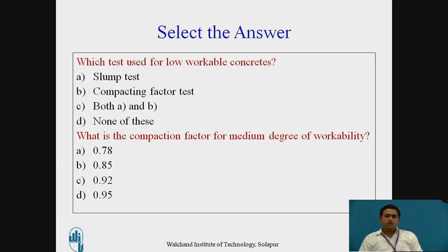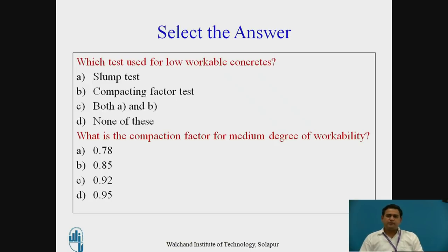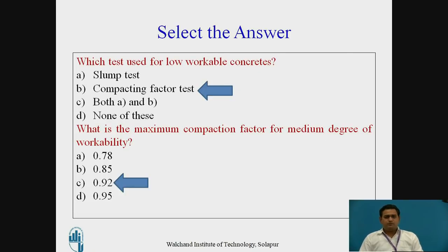First question: which test is used for low workability concrete? The options are: slump test, compaction factor test, both A and B, or none of these. Second question: what is the compaction factor for the medium degree of workability? Options are 0.78, 0.85, 0.92, or 0.95. The answer for the first MCQ is compaction factor test, and the compaction factor for the medium degree of workability is 0.92.